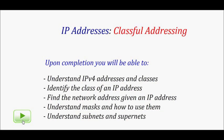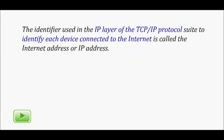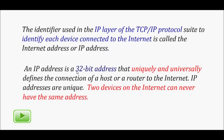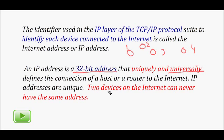An IP address is an identifier in a TCP/IP protocol where each device on the network gets a unique IP address. This IP address is basically a 32-bit number. There are many computers on the internet, and similar to how we give students row numbers in a classroom to uniquely identify them, we give each machine a unique 32-bit number.